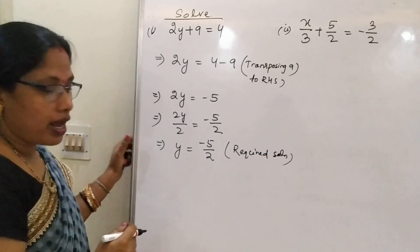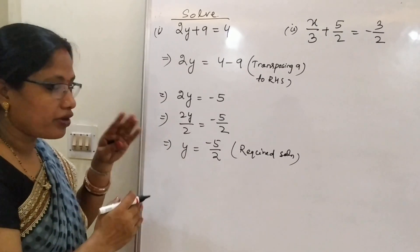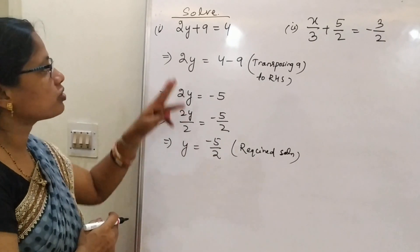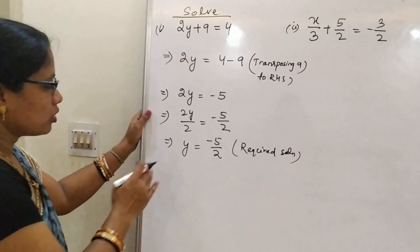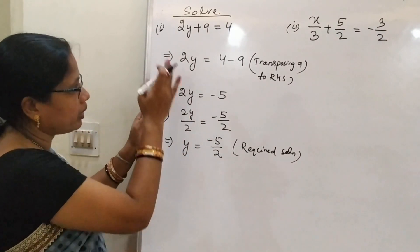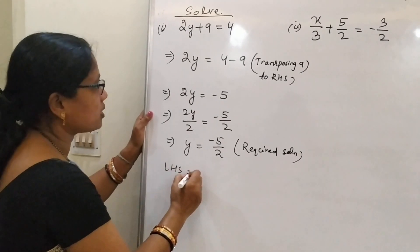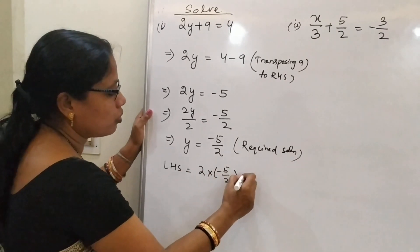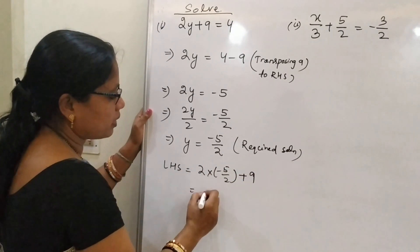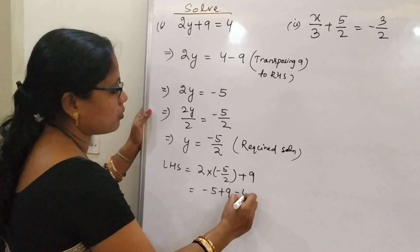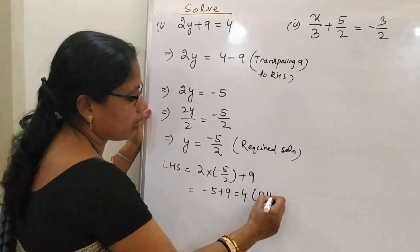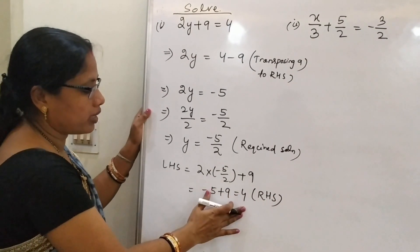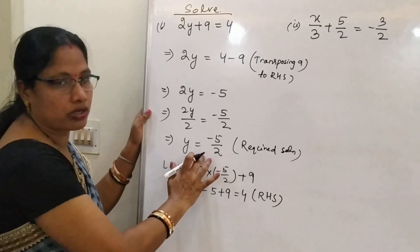Now verify whether y equals minus 5 by 2 is the solution. Substituting into the equation: LHS equals 2 multiplied by minus 5 by 2 plus 9, which becomes minus 5 plus 9, equals 4. This equals RHS. So LHS equals RHS, and our solution is correct.